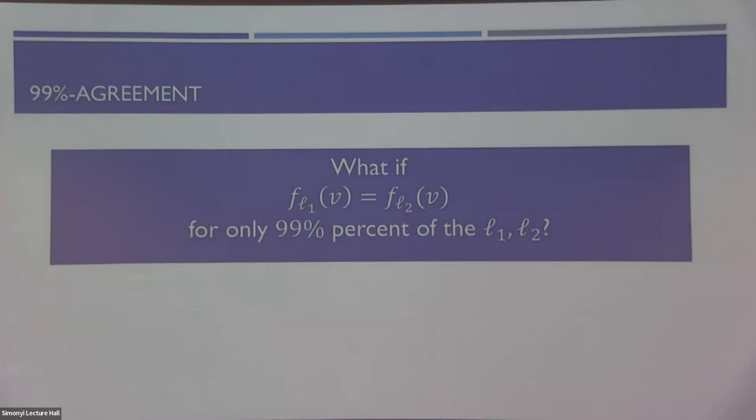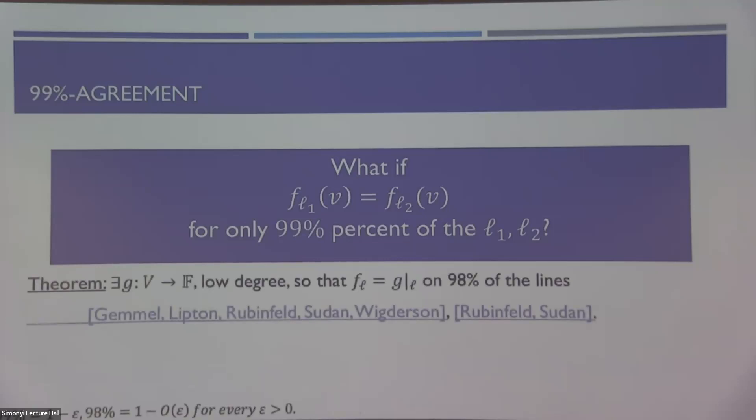We try to robustify the statement and ask what happens if our set of local functions are not consistent on the entire pairs of lines, but maybe only for most of the pairs of lines, say 99%. In this case, and this is already a theorem, one can show that there still exists a low degree function that agrees with most of these local functions on the line.